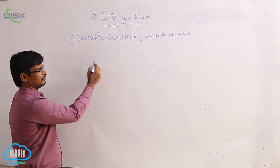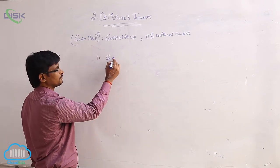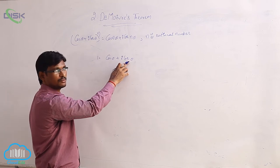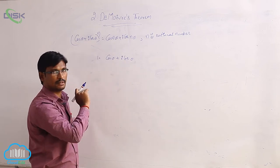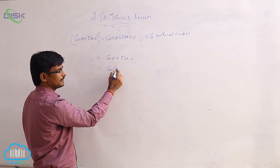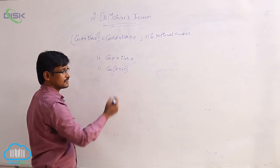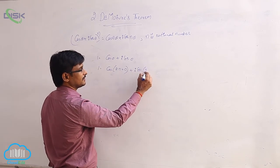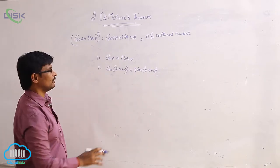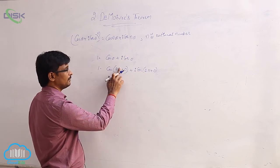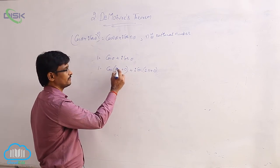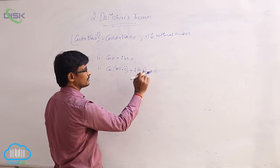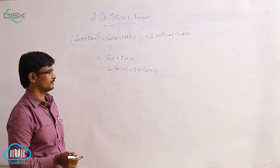We can write 1 equal to cos 0 plus i sin 0, since cos 0 is 1 and sin 0 is 0. Similarly, 1 equals cos 360 plus 0, which is cos 0 only, and sin 360 plus 0 is sin 0. Not only for 360 but for 720 and all multiples of 360, which we write as 2k pi where k belongs to any integer. So 1 equals cos(2k pi) plus i sin(2k pi).